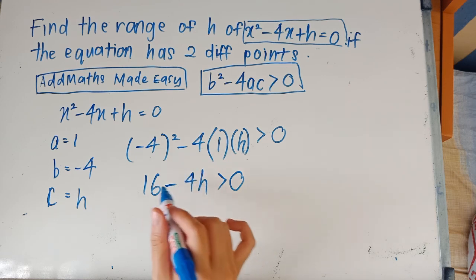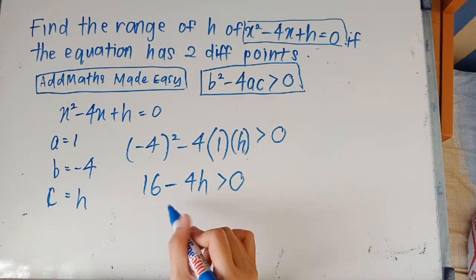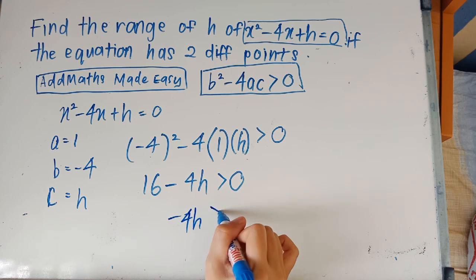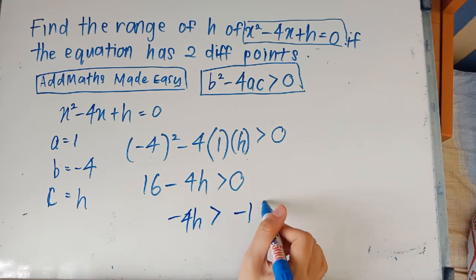Now you want to move 16 over to the other side: negative four h bigger than negative 16.